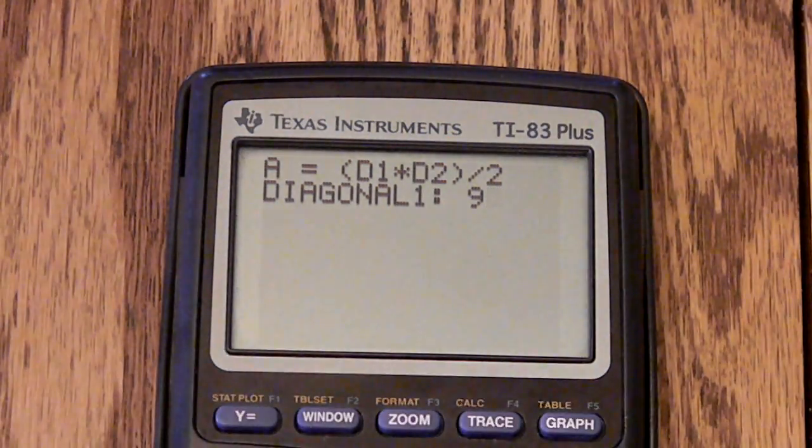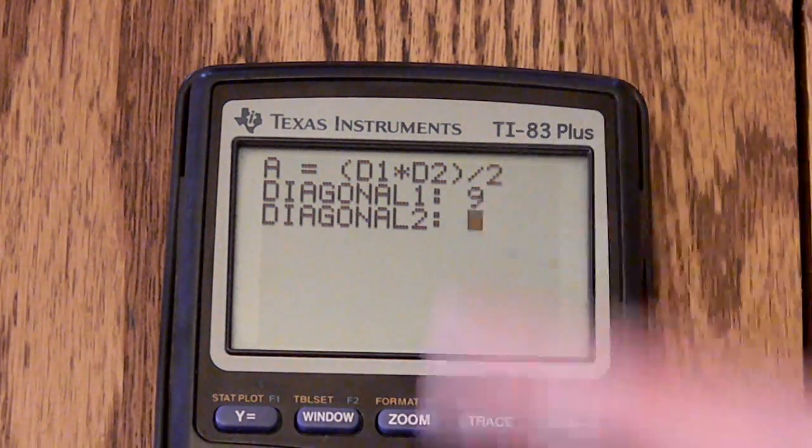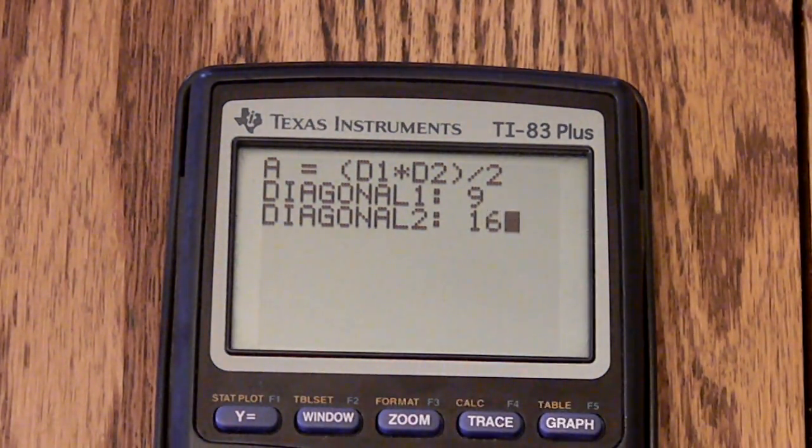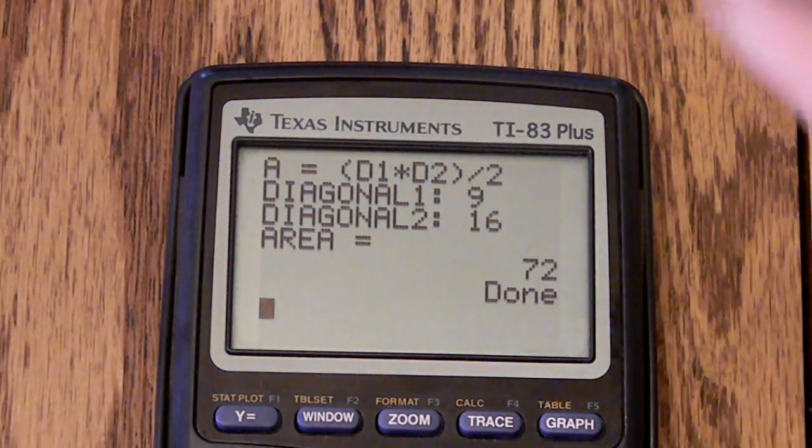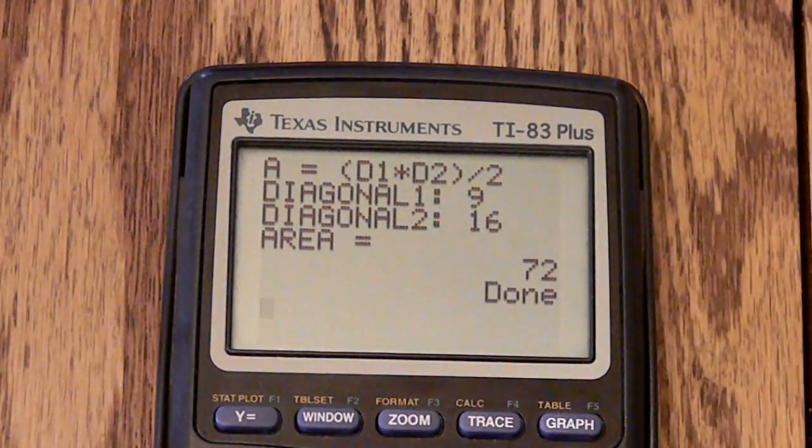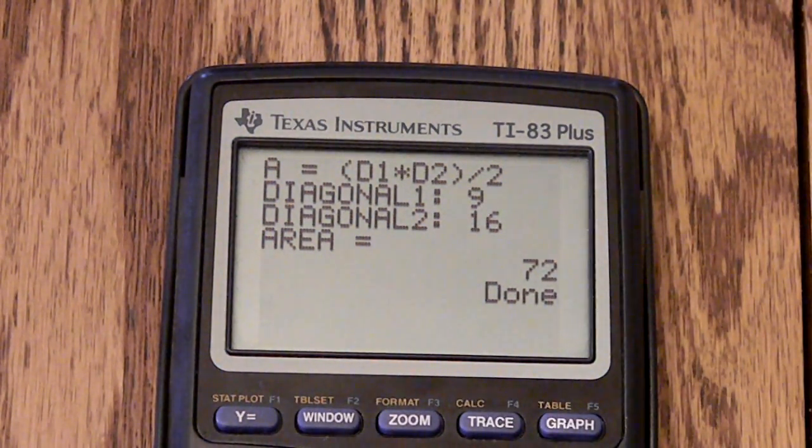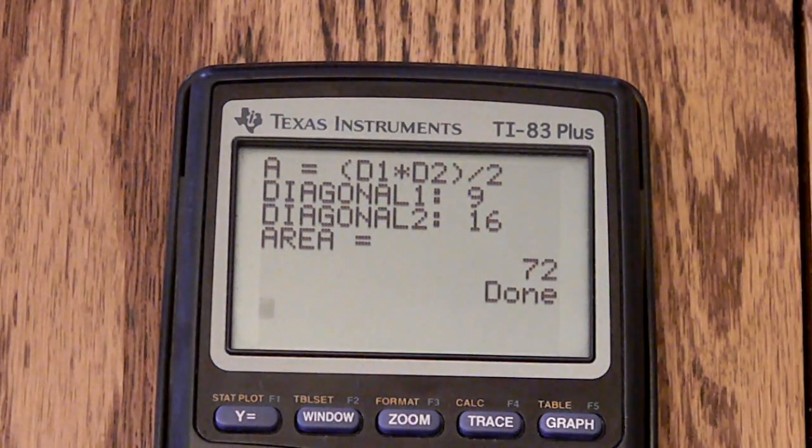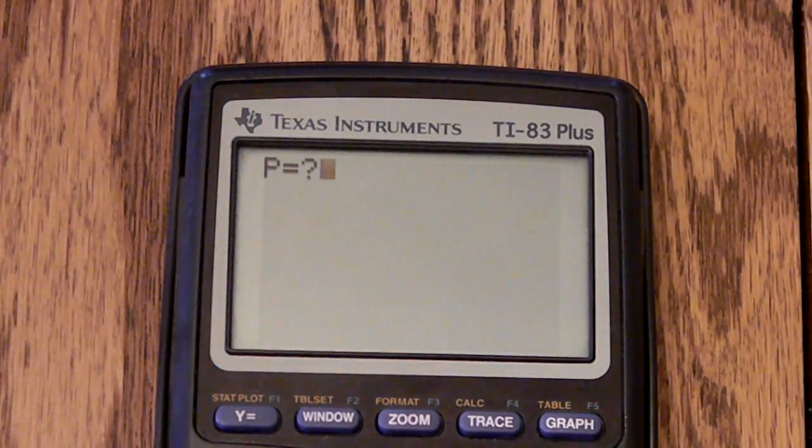And then diagonal two is 16. And then you multiply the two, divide by two, and then you get 72 is the area. So the area equals 72 units squared. That's basically how this program works.